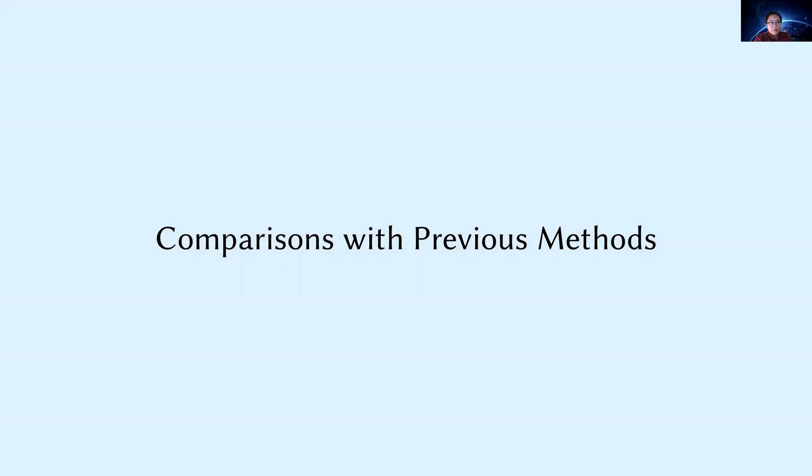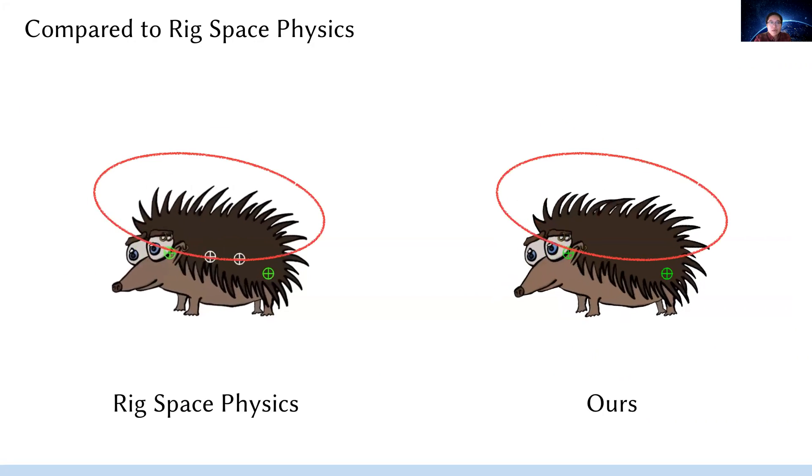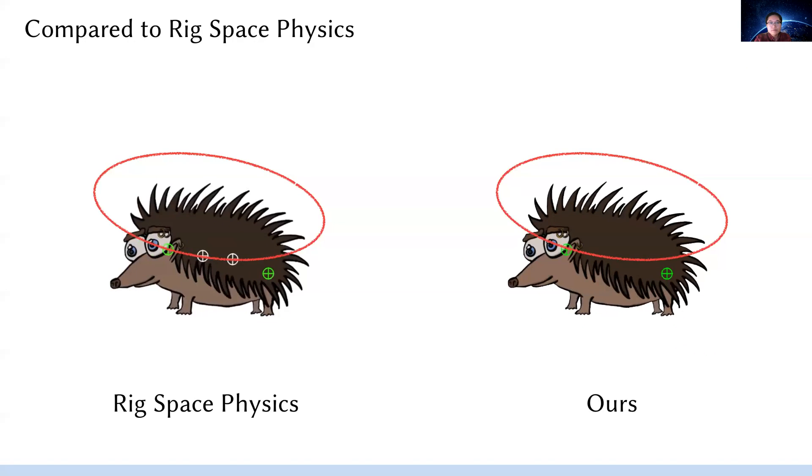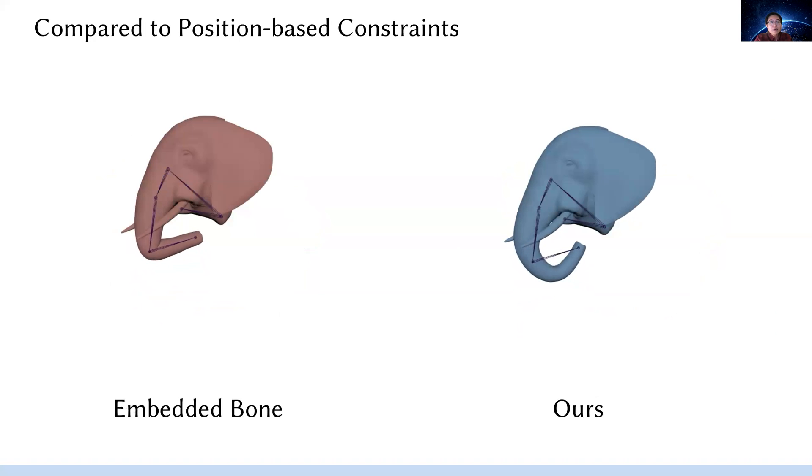In the end, we compare our method with some previous approaches. In contrast, our method adds rich details of dynamics on top of the original rig. Another common approach for combining physical simulation and animation is to have geometrically embedded rigid bones to drive the volumetric mesh, which usually requires meaningful geometric bones. For example, with this input motion of elephant trunk, with rigid bars embedded, it shows awkward kinks around the joint, while our method interprets the rig as an action on the shape directly.